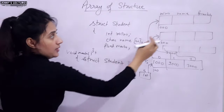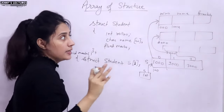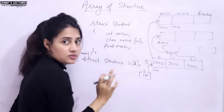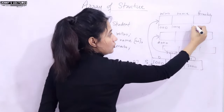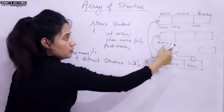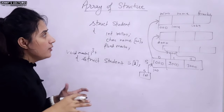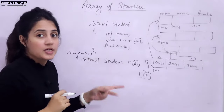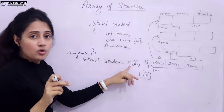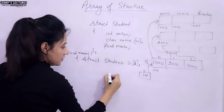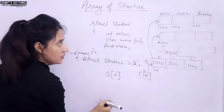To access the roll number of student 1, we use the variable name with the dot operator and the structure member name. Since we have an array, not a single variable, we write: s[0].rollnumber. That is how you access the roll number of the first student using the array index 0.